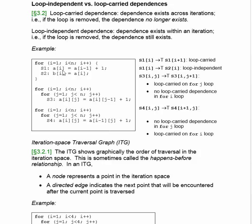Also, we see that A sub i is computed in S1 and used in S2. This means that statement S2 is dependent upon statement S1 finishing before it. But this is a loop-independent dependence, because if you take out the for statement, it's still there — you still need to finish S1 before you can overwrite the value of A sub i.